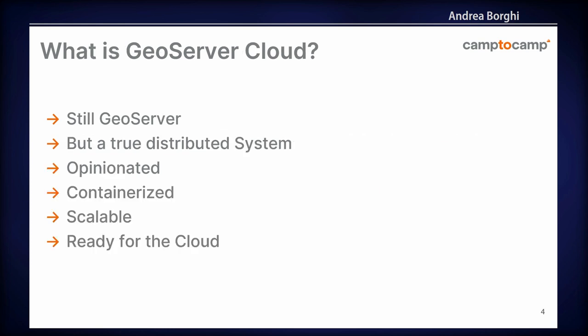It's still GeoServer. We do not develop new features. We take the code of GeoServer as a library and we wrap it with Spring Boot. This means that it is a true distributed system — a distributed application where every worker node actually communicates with each other. From the outside, you have one application; in the background, you might have 60 worker nodes running at the same time. We call it opinionated because it was a strong choice to use Spring Boot, and also regarding the extensions we have chosen to support and build into our Docker images. It is meant to be containerized, scalable, and it's really born for the cloud.